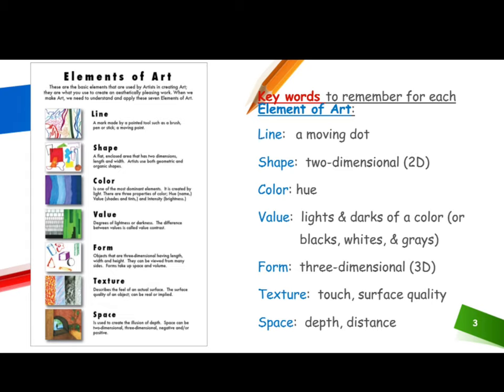Color: color is one of the most dominant elements. It is created by light. There are three properties of color — hue (the name), value (the shades and tints), and intensity (the brightness). Value refers to degrees of lightness or darkness.